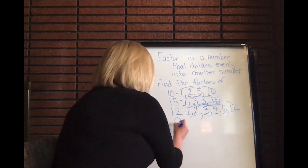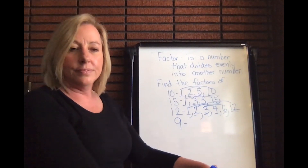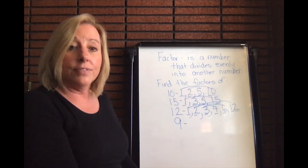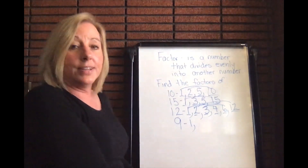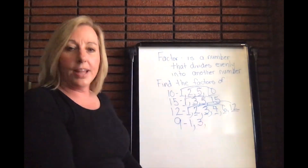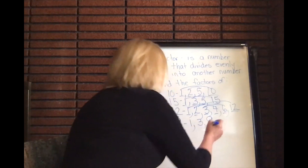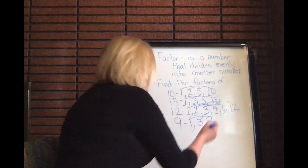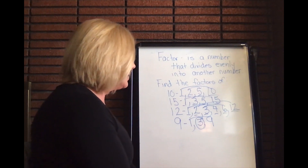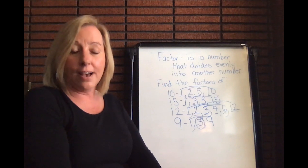I'd like to challenge you to find the factors of 9. The first factor is always 1. It's not even, so 2 is not a factor. Three: yes, because 3 times 3 equals 9. Four through eight: no. And the last is 9 itself. Looking at partners: 1 times 9 is 9, and 3's partner is itself because 3 times 3 equals 9. So the factors of 9 are 1, 3, and 9.